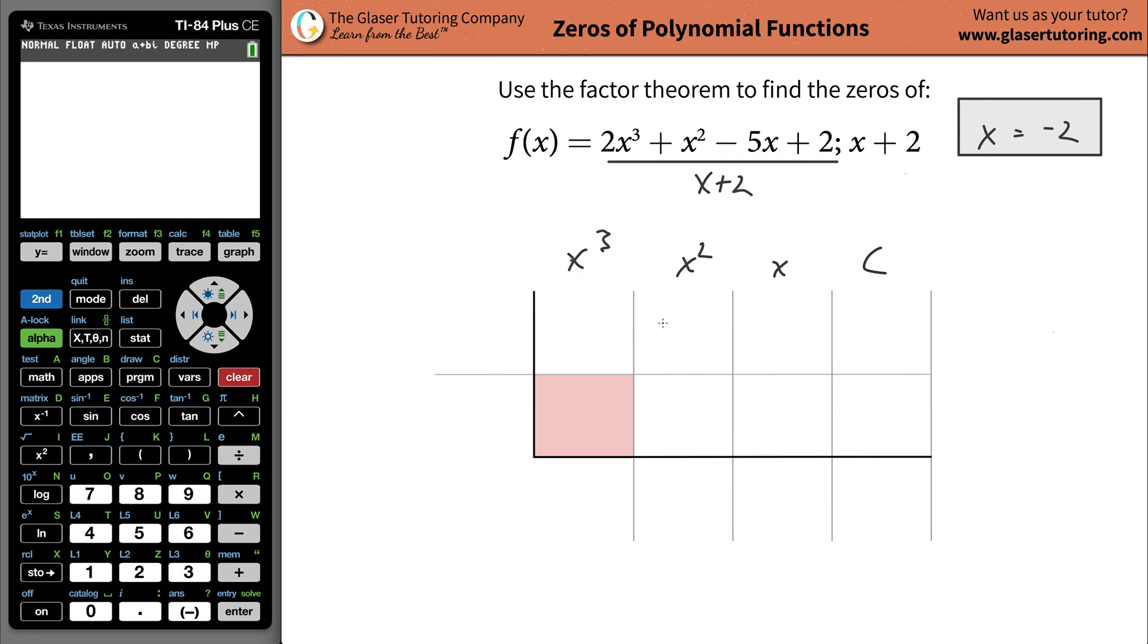So the coefficient of the x cubed term is going to be a two, coefficient of the x squared term is a one, coefficient of the x term is a negative five, and coefficient of the constant is a two. Now to find the value that goes on the outside here, all you're simply going to do is you're going to take your denominator. Now this has to be a linear function, by the way, something like this. And what you're going to do is you're going to set that equal to zero, solve it for x. That's the same thing we did before. And this is basically like finding the value of k and you're going to plug that in there.